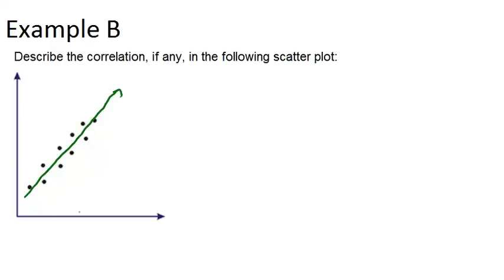As one variable increases, the other one is also increasing. And the slope of my best fit line is positive. So this would be a positive correlation, and it might even be a strong positive correlation, because those points are pretty close to that line. They're all pretty close to making a line to begin with.